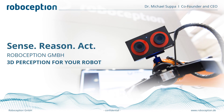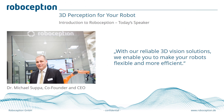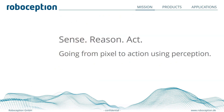Welcome to my presentation on 3D perception for robotics. My name is Michael Super and I'm the CEO and co-founder of Roboception, a Munich-based startup. Roboception's mission is sense, reason, and act. We are going from pixel to actionable perception, providing our customers not only point clouds and depth information, but also task-relevant information such as grasp points.